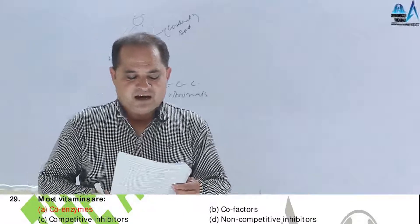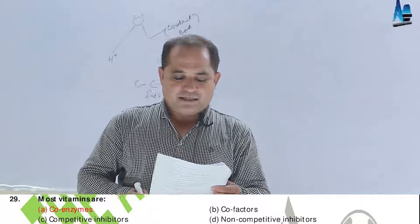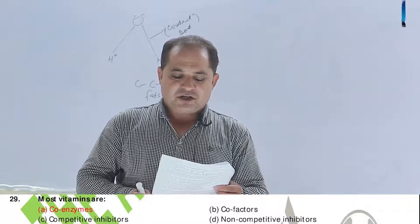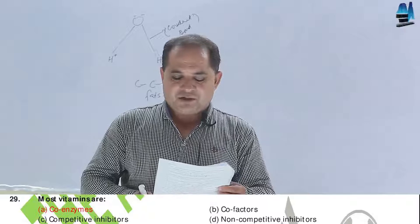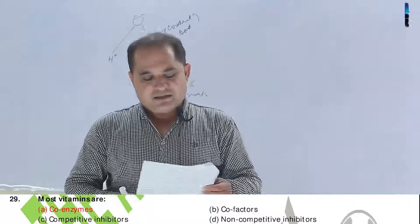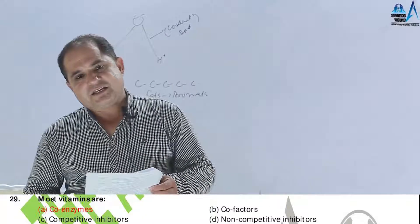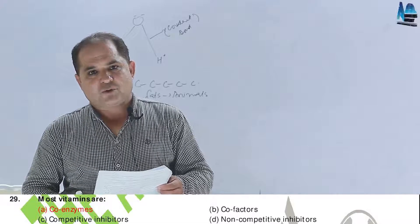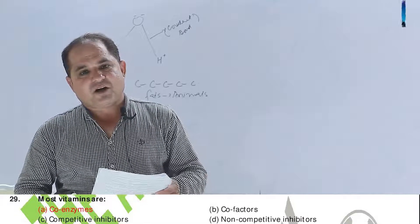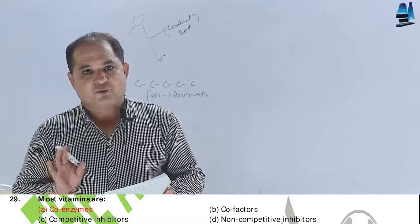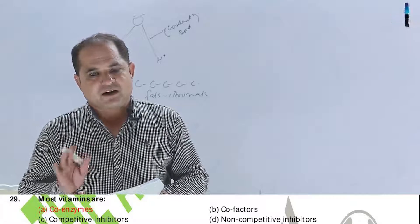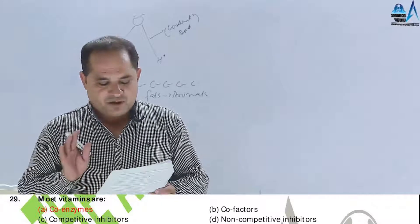Question number 29. Most vitamins are: A, coenzymes; B, cofactors; C, competitive inhibitors; D, non-competitive inhibitors. Answer should be A — coenzymes — because most vitamins act as coenzymes for the holoenzyme, also known as the conjugated enzyme.